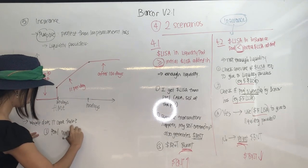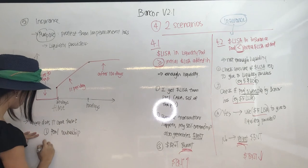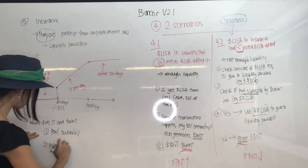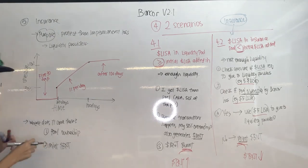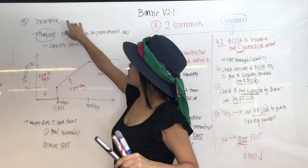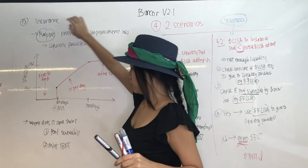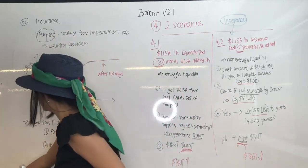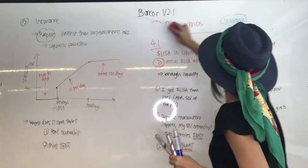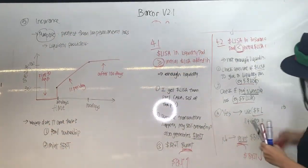The second source is minting BNT tokens. If pool ownership isn't enough to cover the impermanent loss, the system will mint BNT tokens of the equivalent amount of the impermanent loss and give them back to the liquidity providers.